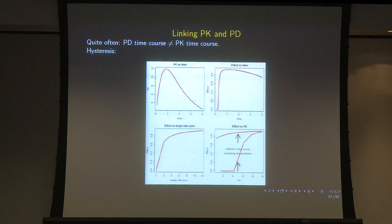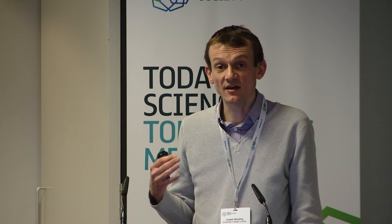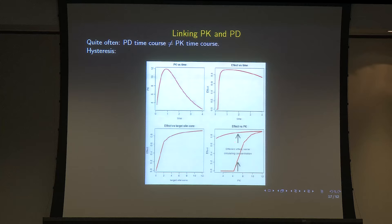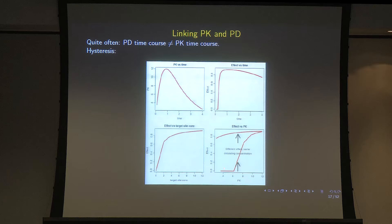When modelling time courses of pharmacodynamic effects we must account for dynamic concentrations — the PK curve goes up then down. If the target is not in the circulation and the drug needs to distribute out, plotting observed concentration versus effect gives hysteresis: two different observed effects at the same drug concentration. This is why we must fit mathematical models — if you just plotted observed concentration versus effect you'd be very confused. Mathematical models help us understand these complex relationships.